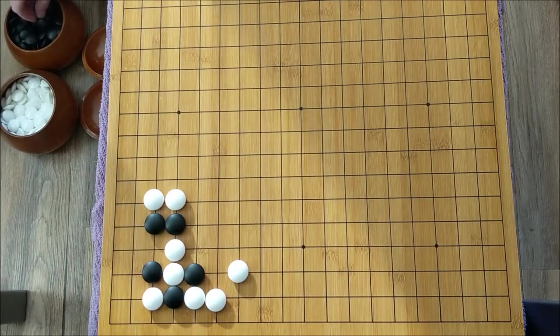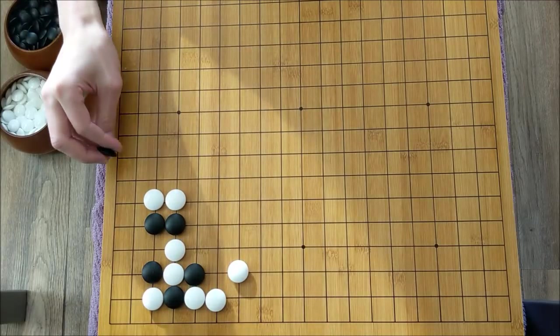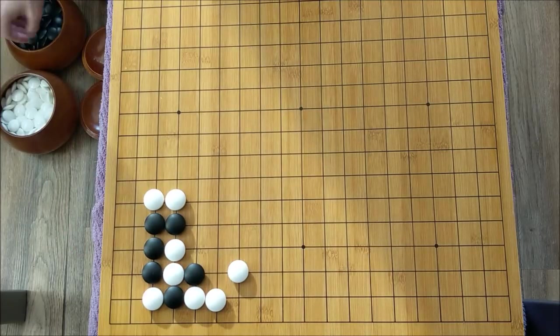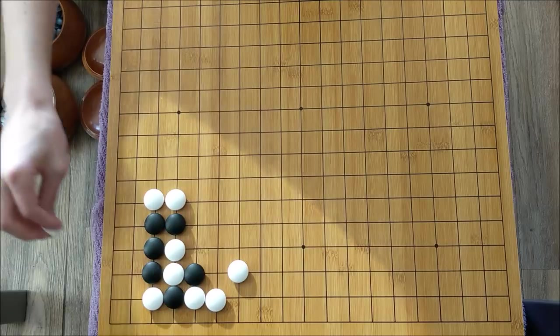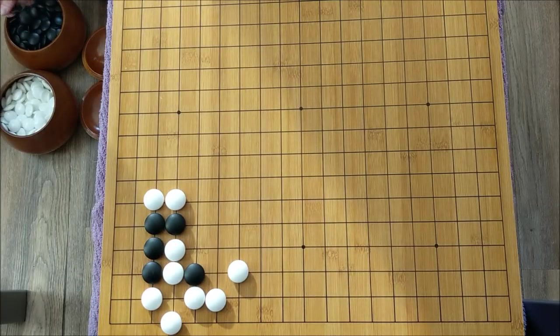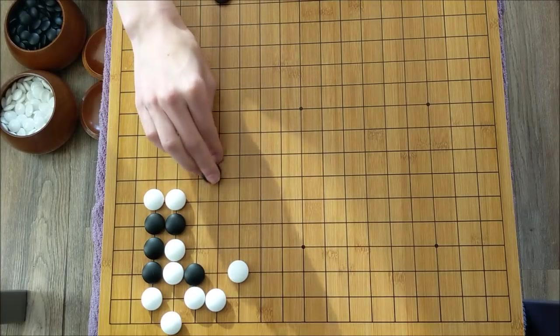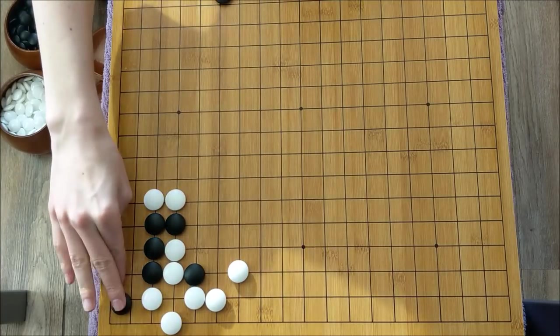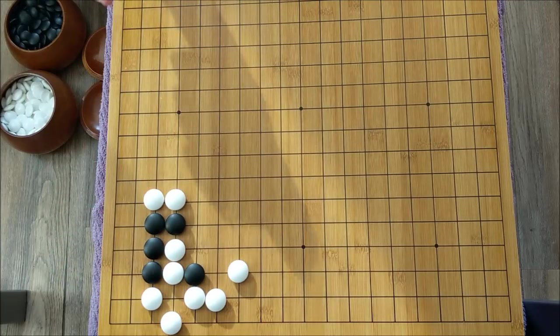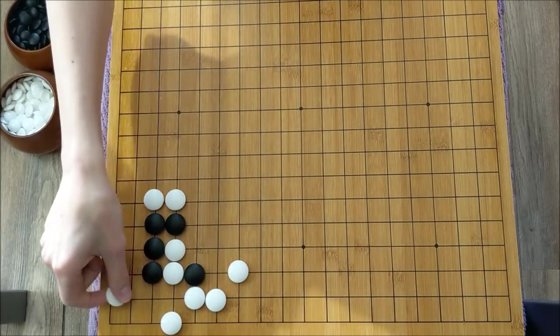Now, this might be dizzying you up a little bit because there's cutting points, there's this, there's that, there's all these black stones everywhere. But the thing is, these are so short in liberties, there's only two liberties right now, that black is going to have a lot of forcing moves in this area. If white tries to execute the atari, black has actually a lot of options. Black can connect this way, which is an atari. White connects.